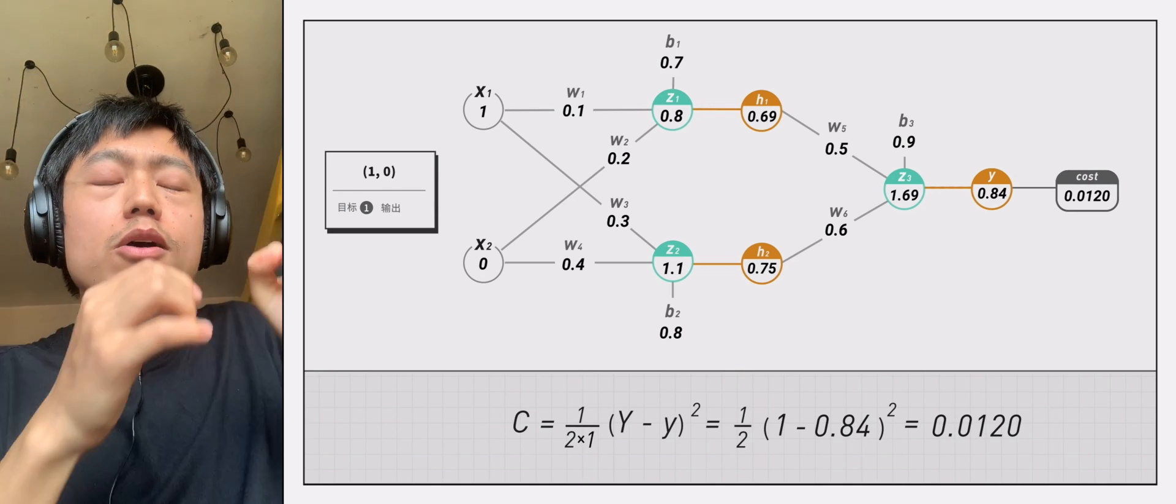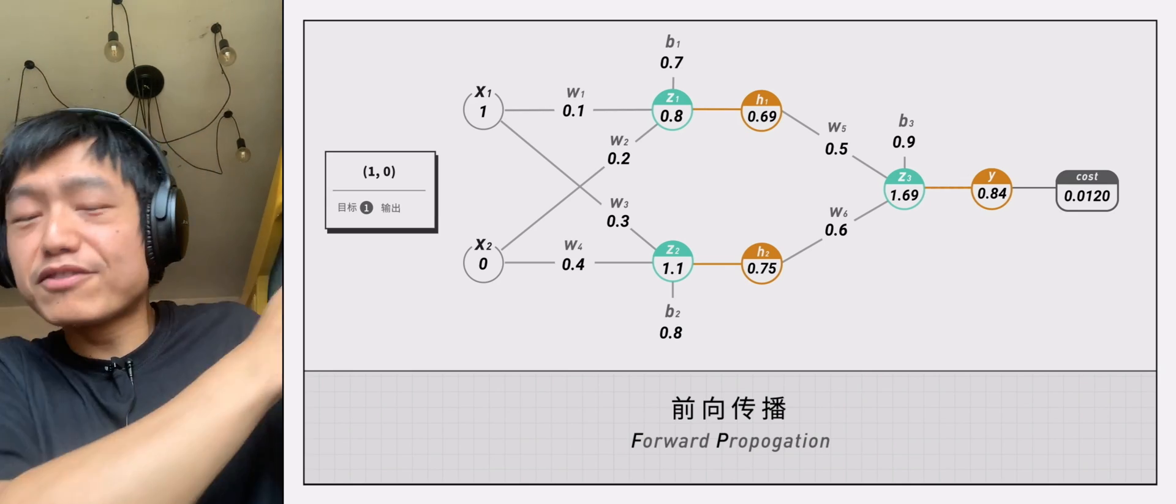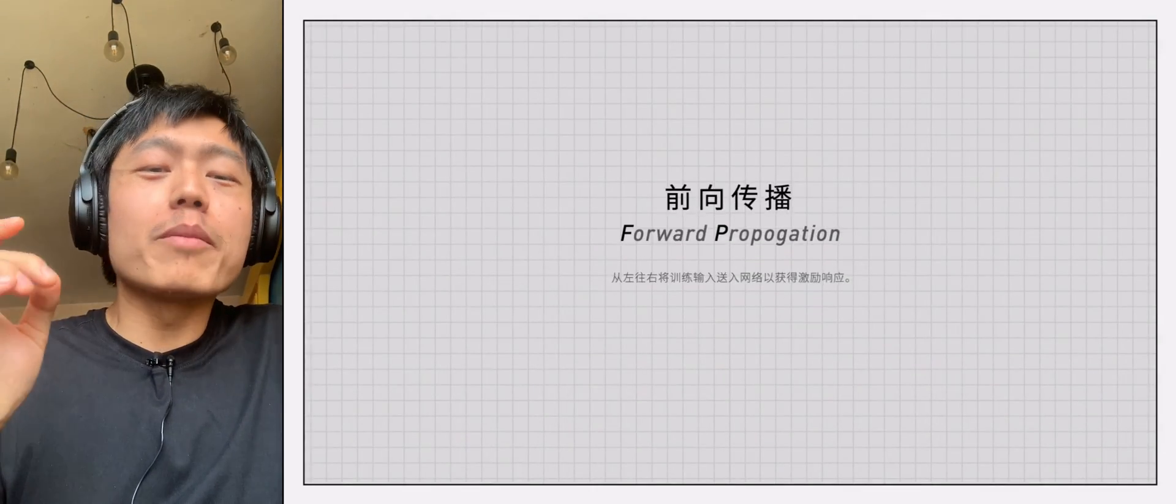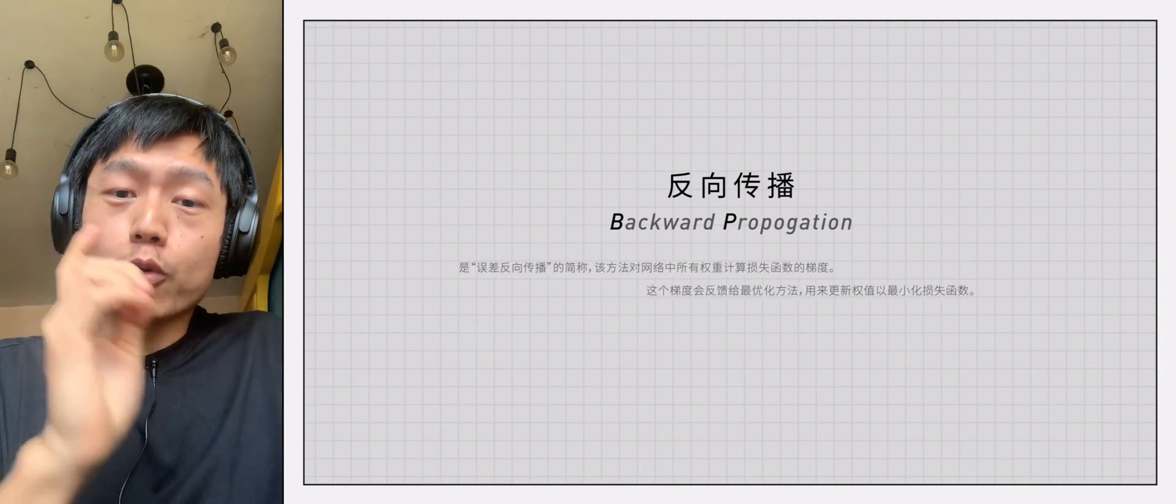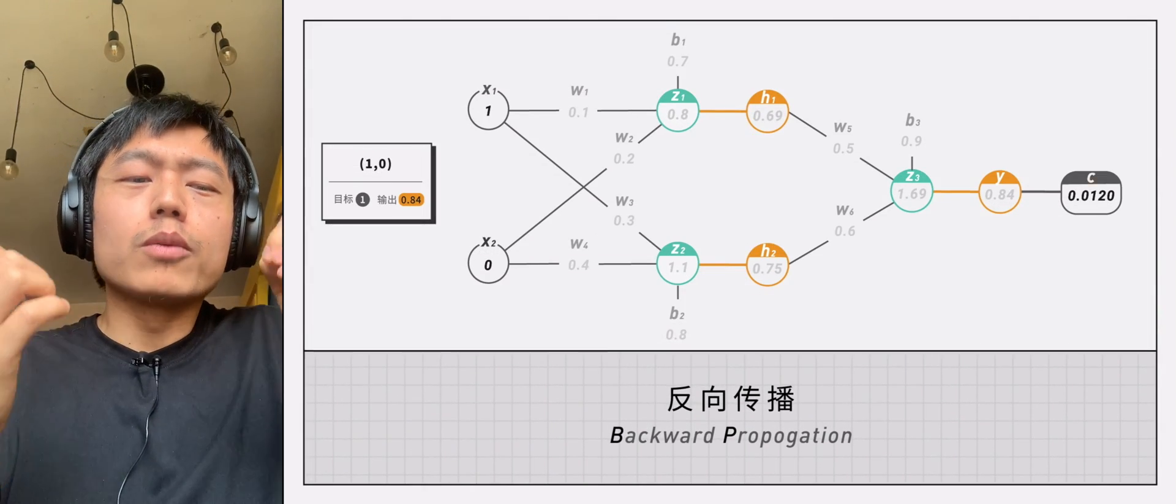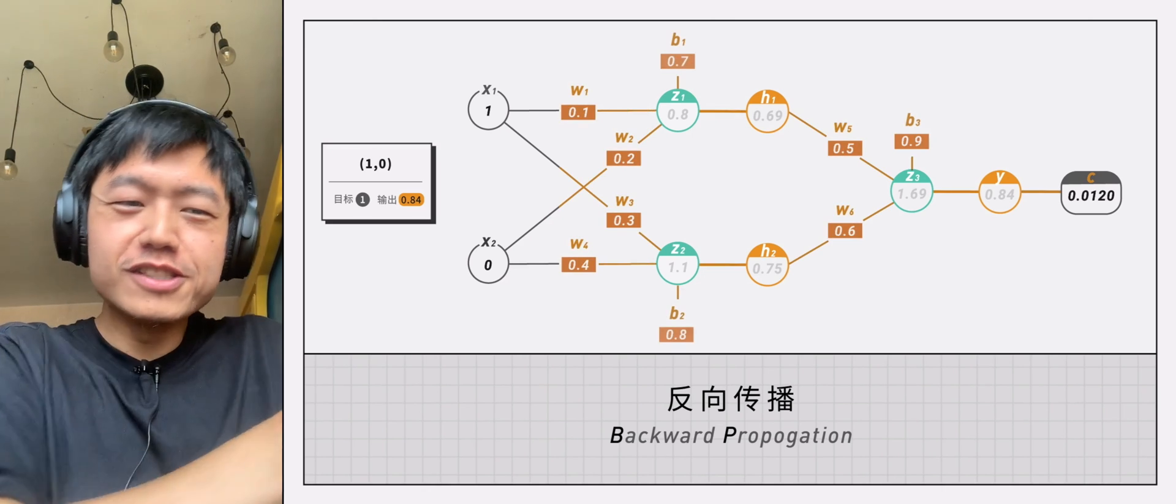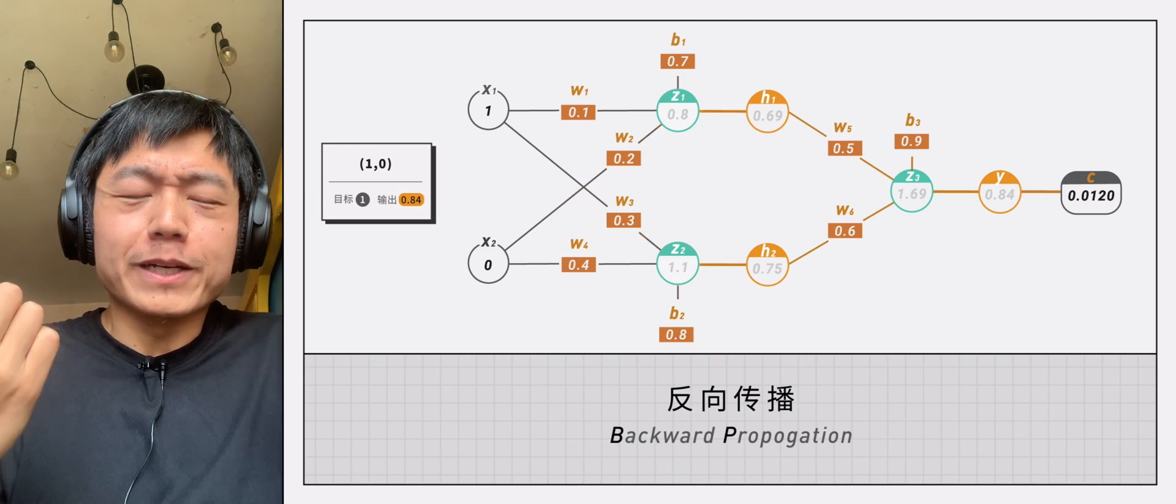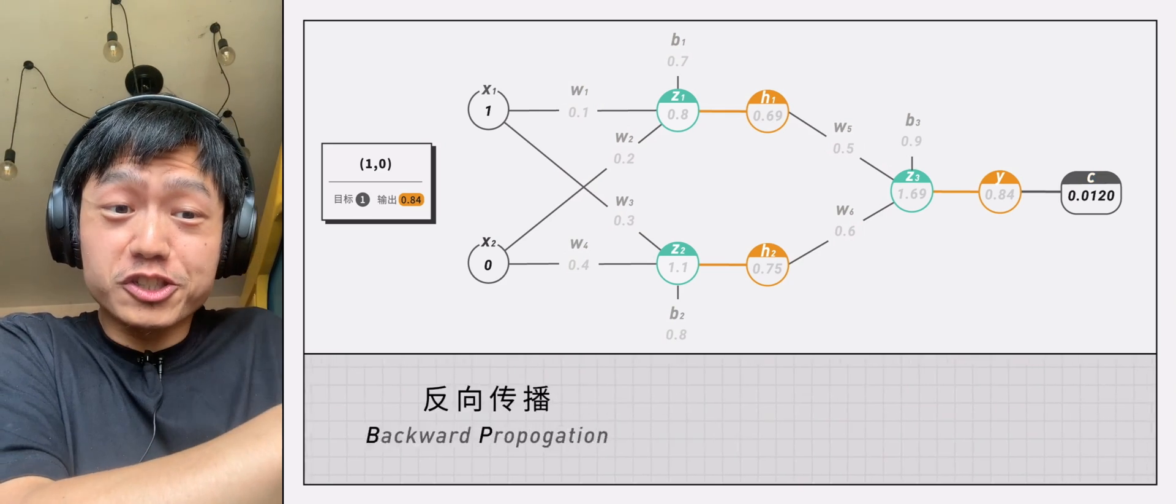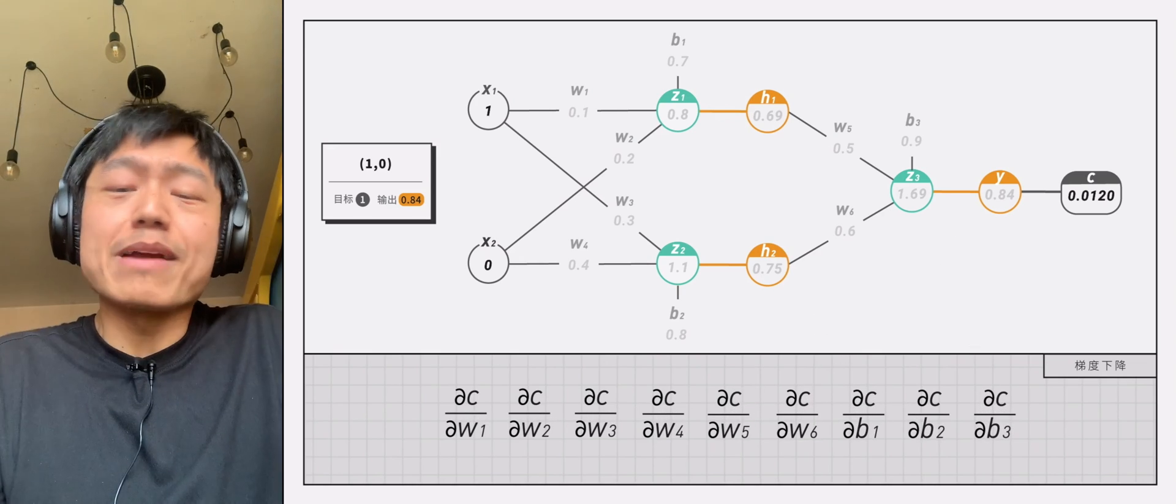This process is called forward propagation. We fill in all the blanks from left to right. Then let's start to talk about backpropagation, which is from the picture above. By referring to c on the right, we try to figure out what the values of b and w on the left are going to change. How should we calculate exactly? This requires us to gradient descent the loss function to find the partial derivative of c to these nine parameters.